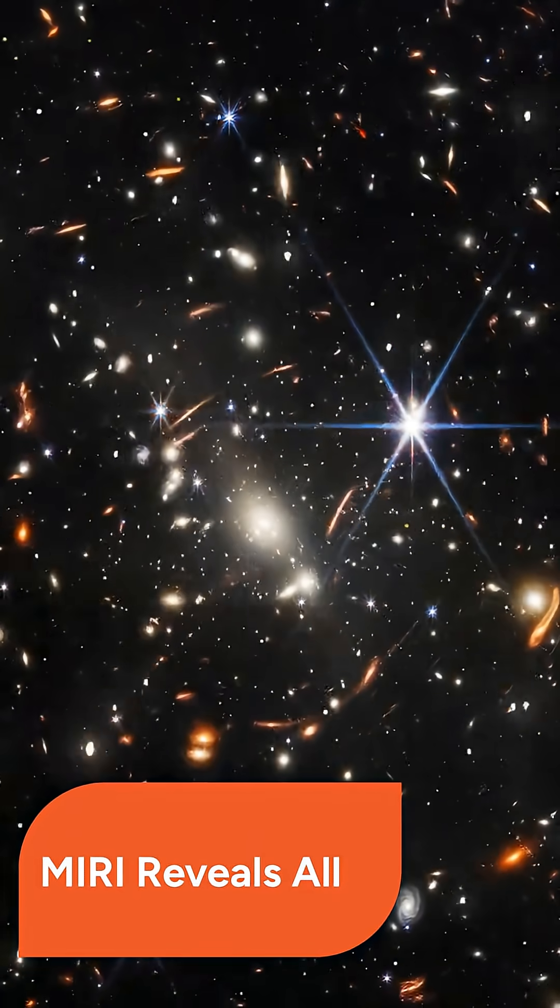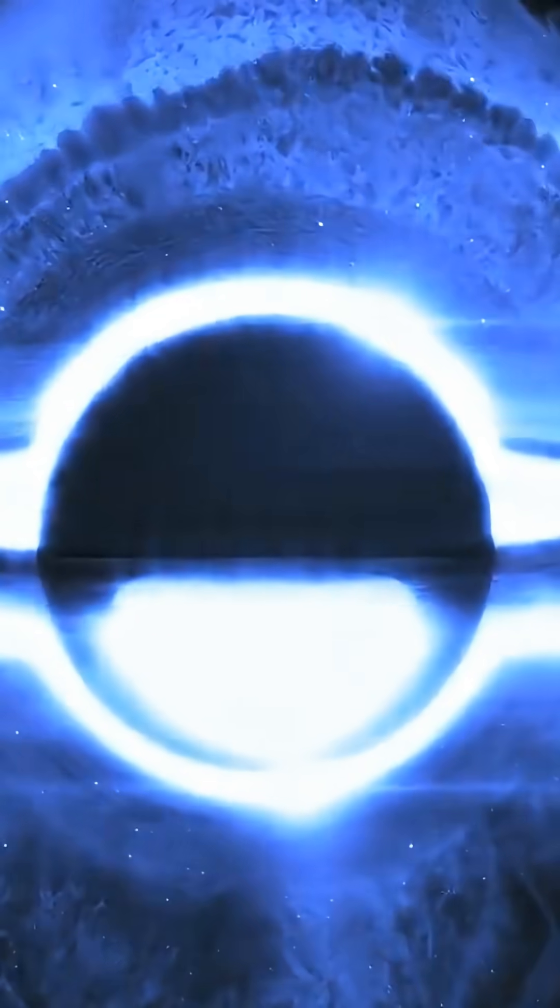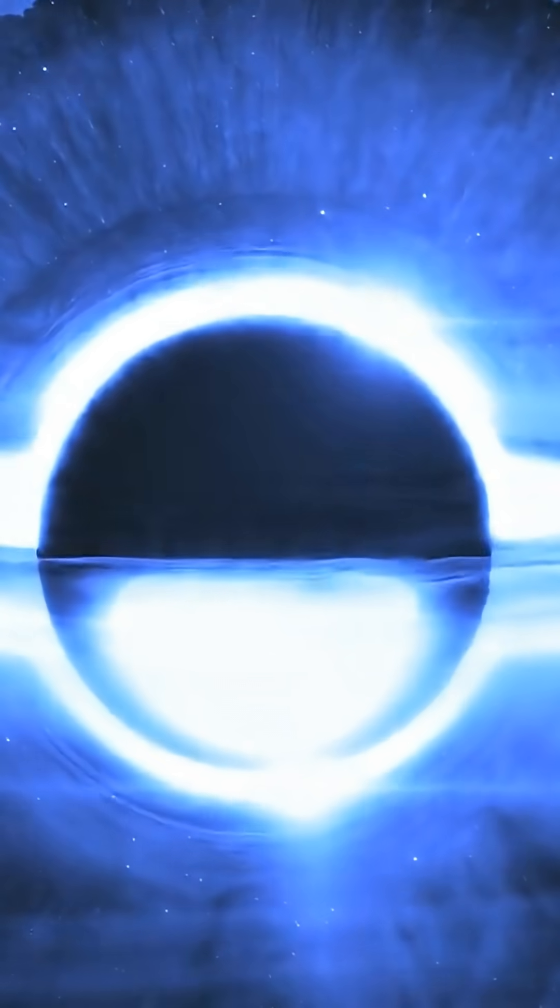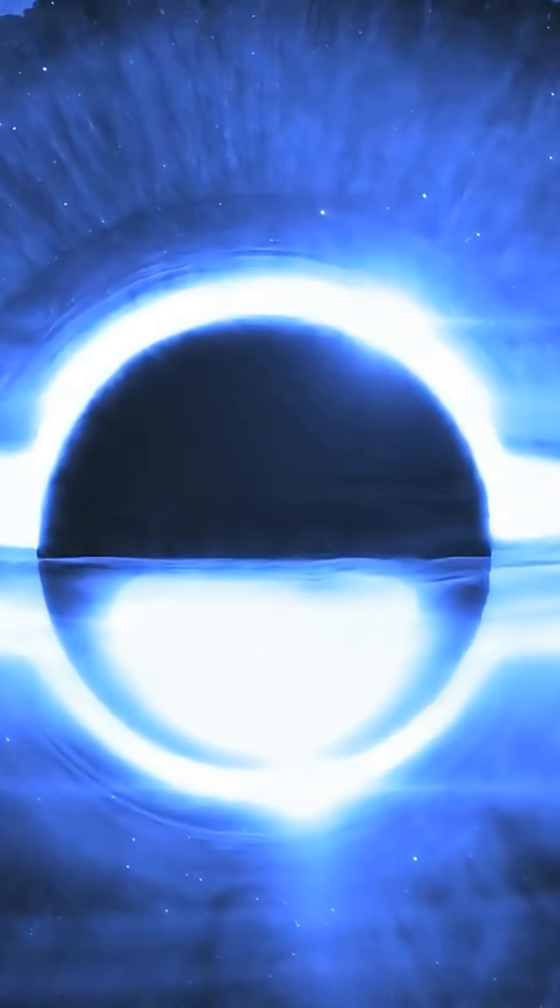Virgil's true dual nature only became apparent when MIRI observations were added to the dataset. Data from only JWST's Near-Infrared Camera, or Near-Infrared Spectrograph, would simply classify Virgil as a typical star-forming galaxy.